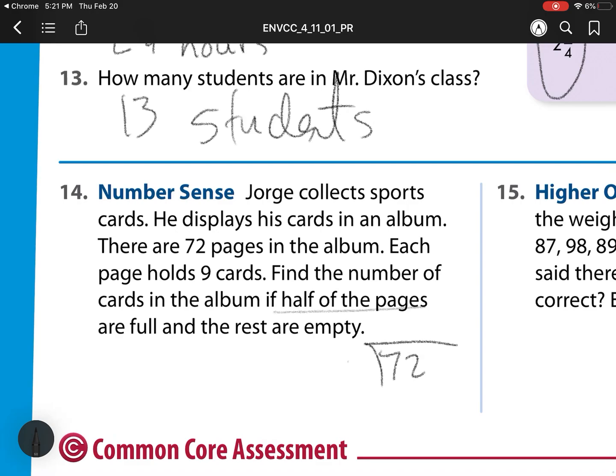So we have 72. Each holds 9. Half of the pages have cards in them. So we have that 72. We need to break that 72 up in half. So that is going to be 3, subtract, bring down, 6. So we have 36 pages have cards in them. So each page has 9 cards. So that's 9 times 36. So that's a 4. Regroup the 5. 9 times 3 is 27. Plus 5 is what? That is 32. So he has this many cards. 324 cards.